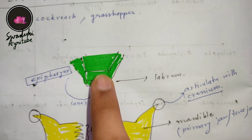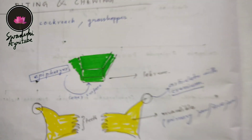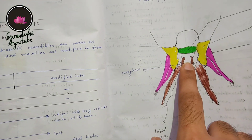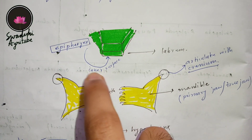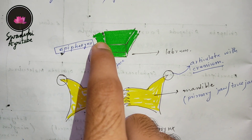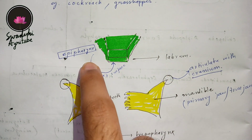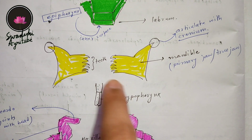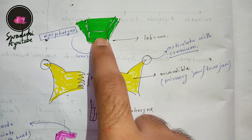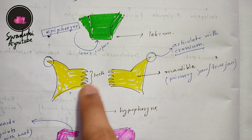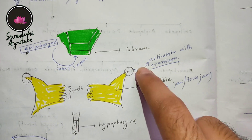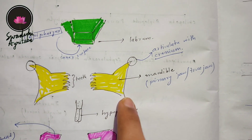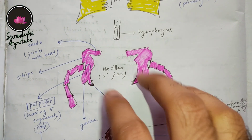First, we talk about the labrum, which is colored green. In all the other mouthpart diagrams it will also be denoted in green. The inner surface of the labrum is called the epipharynx. Under the epipharynx there is the hypopharynx, which is referred to as the tongue of the insect. Now talking about the mandible — you can see the teeth portion, and the circled area is where it articulates with the cranium.